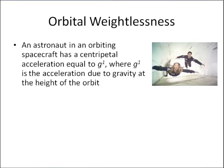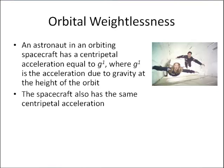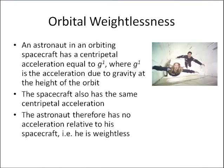An orbiting spacecraft has a centripetal acceleration equal to g₁, where g₁ is the acceleration due to gravity at the height of the orbit. That means that if you are in this spaceship, the spaceship will also have the same centripetal acceleration, and that's why you'll undergo the feeling of weightlessness.